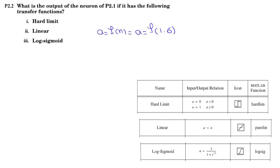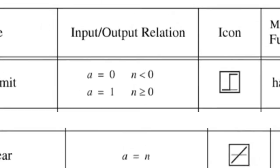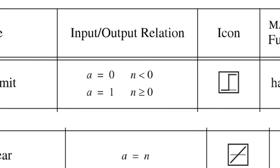A equals transfer function of 1.6. So the first transfer function is hard limit. So let's look at this function. For N less than 0, it is always 0. For N equals or greater than 0, it is 1.